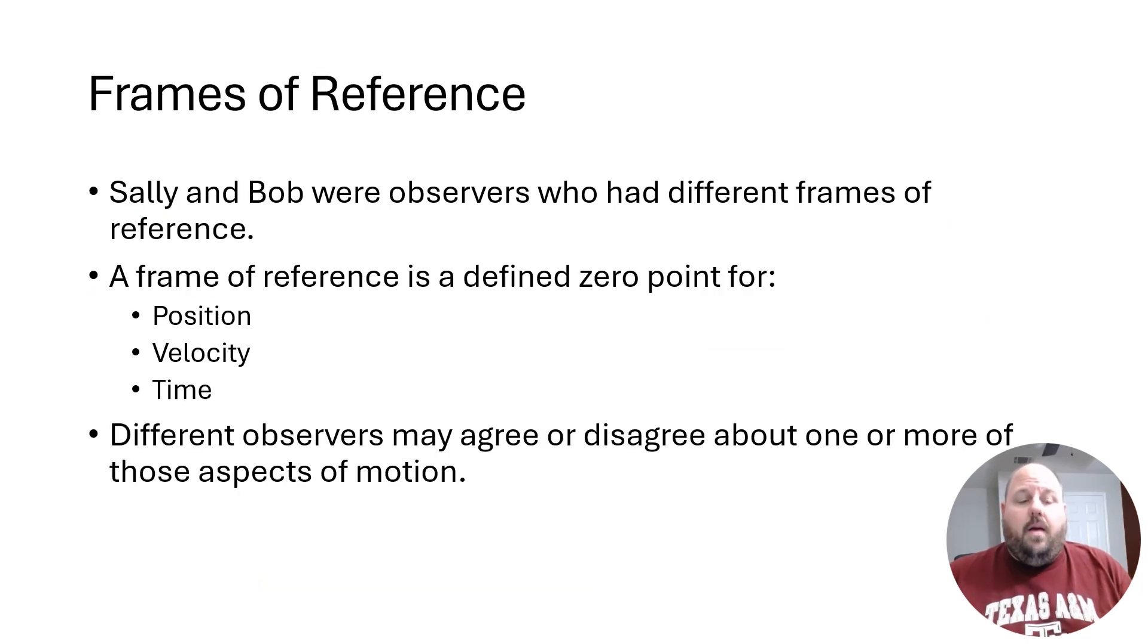And so because they're at different positions, they think the car is at different positions. So Sally and Bob are examples of what we call frames of reference in physics. A frame of reference is simply a defined zero point for any kinematics or later on more physics quantity, such as position, velocity, or even time. Difference in time perspective comes into play when you get to Einstein physics and special relativity and then general relativity. And so different observers can observe motion in different ways because they're looking at it from their own frame of reference, from their position, which might be different than somebody else's.